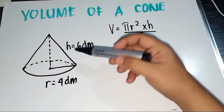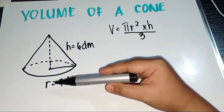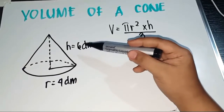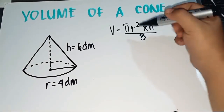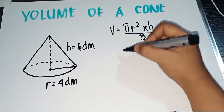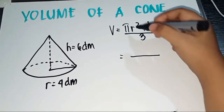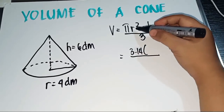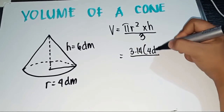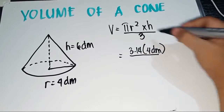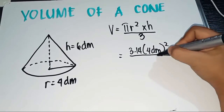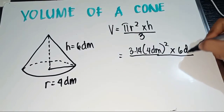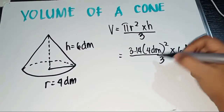We have here a cone which has a diameter of 4 decimeters and a height of 6 decimeters. Let us now substitute into the formula. The value of pi is 3.14, times radius 4 dm squared, times the height which is 6 dm, all over 3.